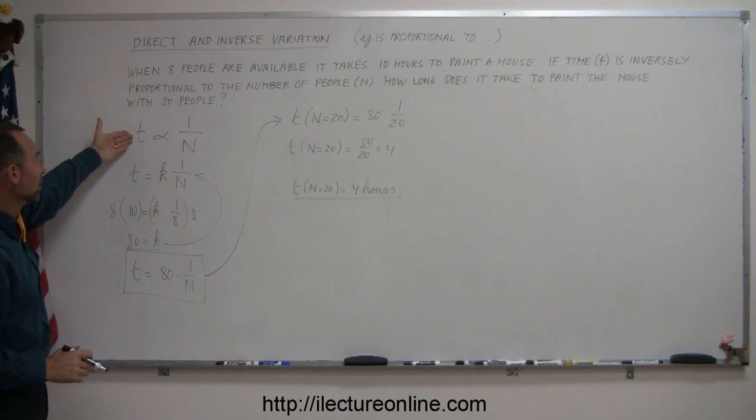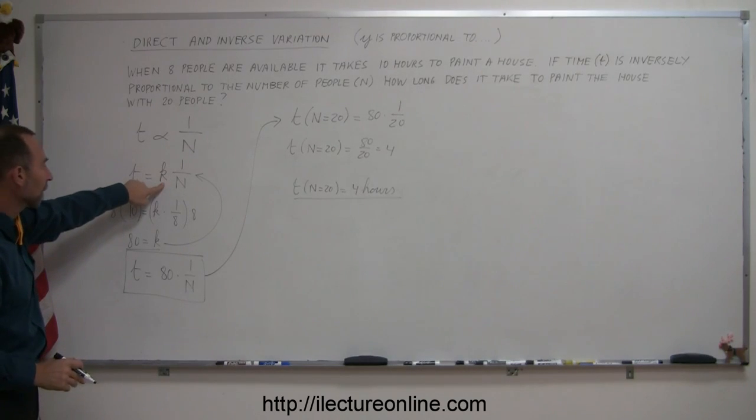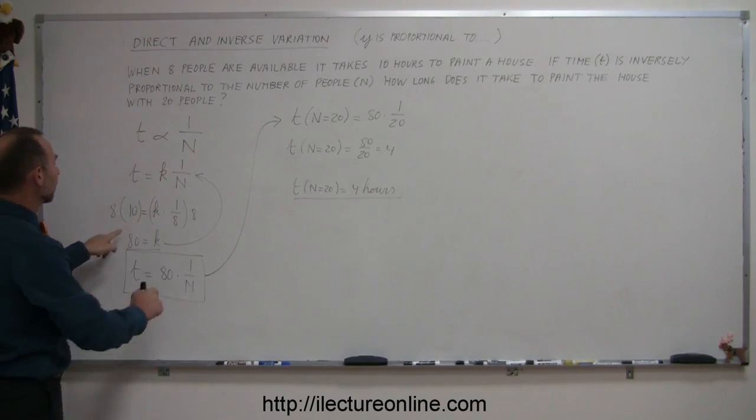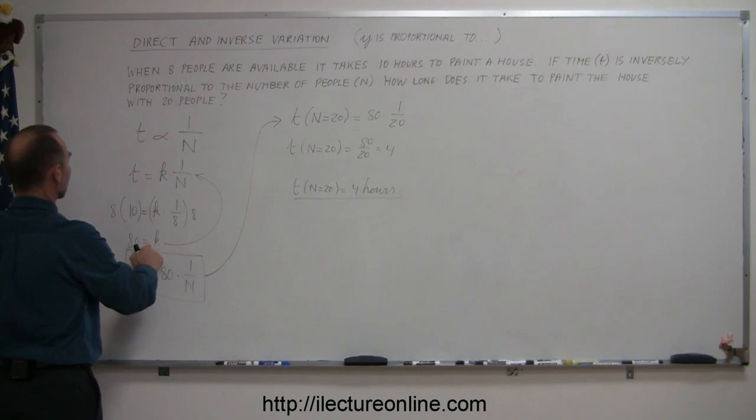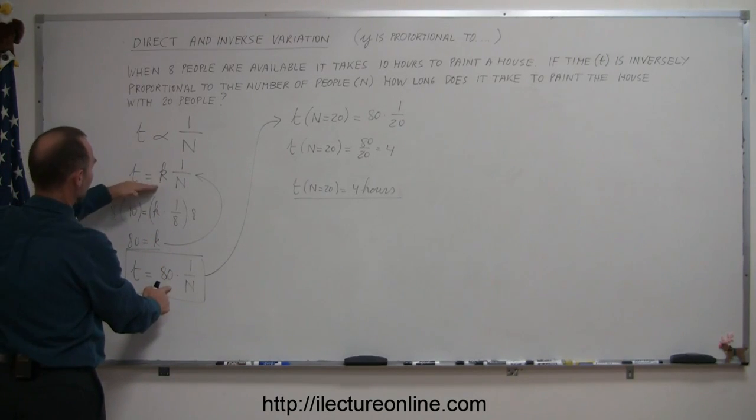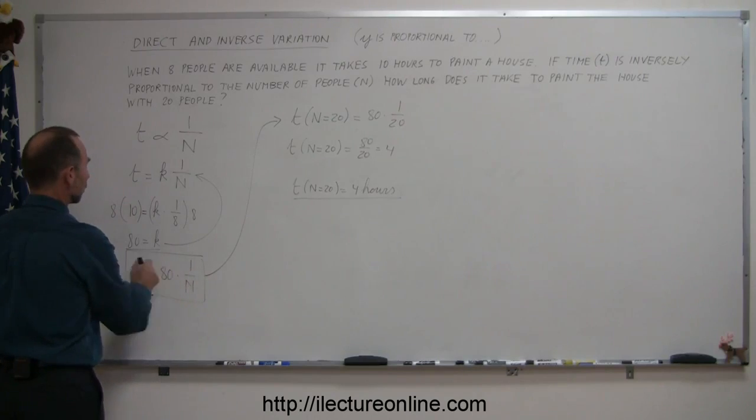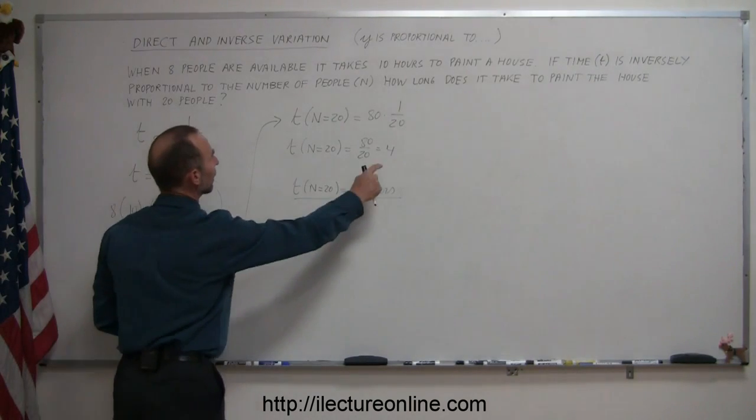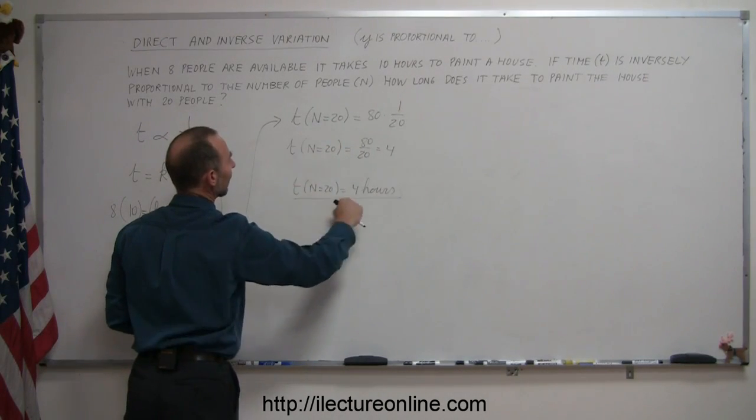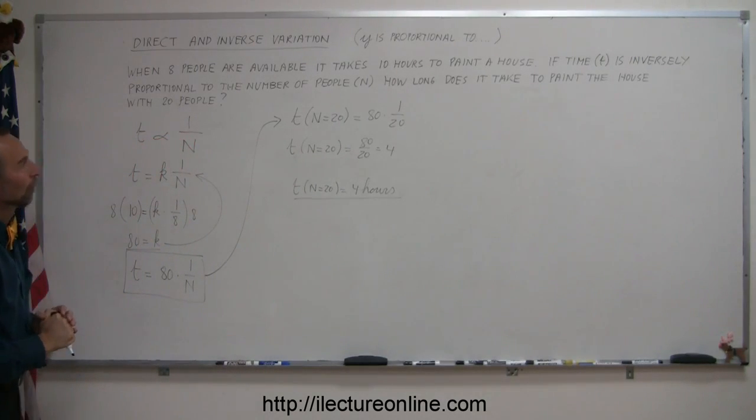you find your proportionality, turn it into an equation using a constant of proportionality, plug in the values that were given to figure out what k equals, plug that back into your equation to come up with the equation including the value for k, and then plug in the new value to find out what the new time is in this case for painting the house.